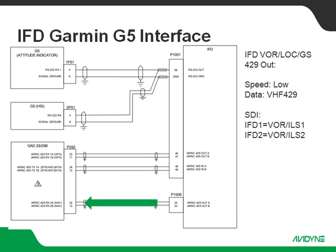And then out of the IFD, the VOR/localizer/glide slope ARINC 429 out — we're going to set that up for low speed and set it for VHF 429. Again, there's an SDI setting here where we can designate our unit as number 1 or number 2 by selecting VOR-ILS1 or VOR-ILS2 on the SDI setting.